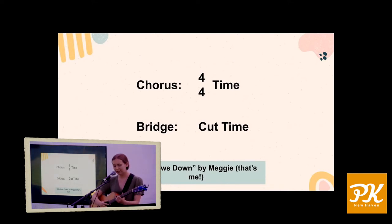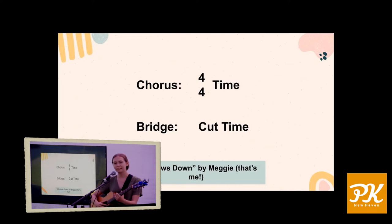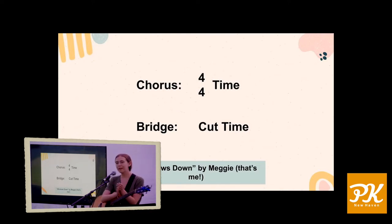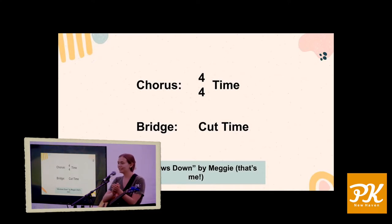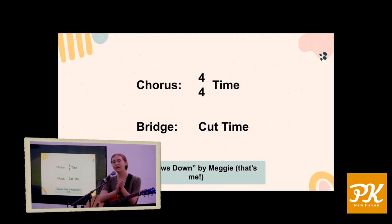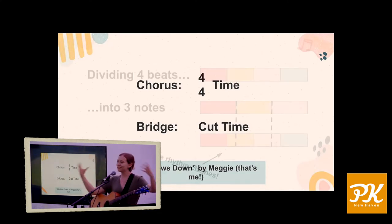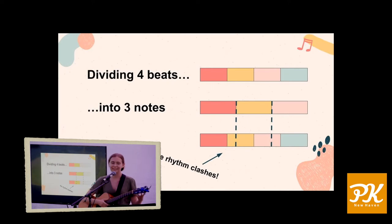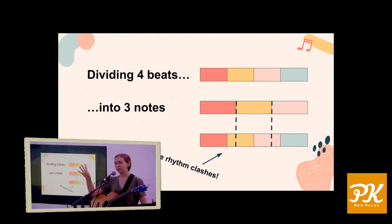This is one of the strategies I find myself using a lot in my own songwriting. For example, I have a song called 'Windows Down' where the chorus goes: 'We've been singing in the car.' And then in the bridge it goes: 'You never know how far you've fallen.' You hear how it gets stretched out — it makes a nice contrast.